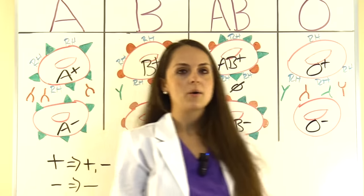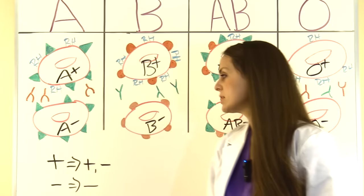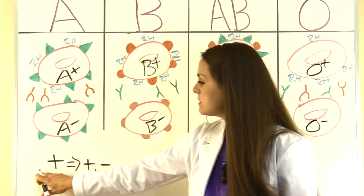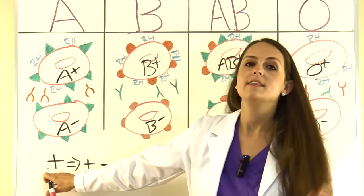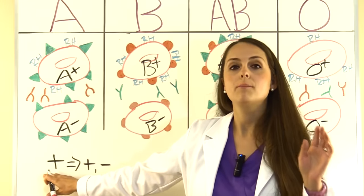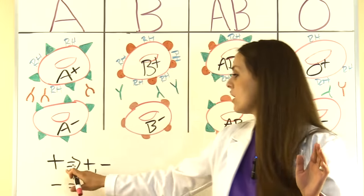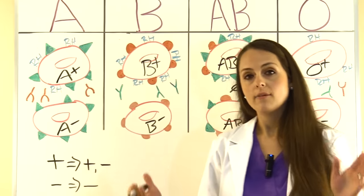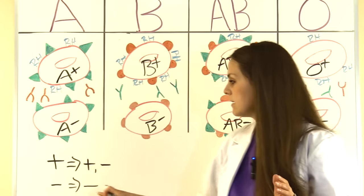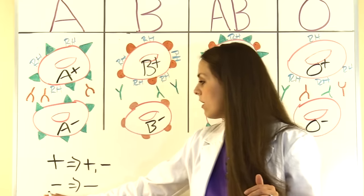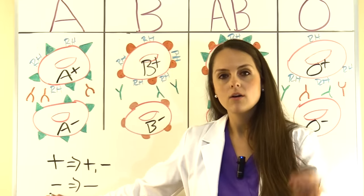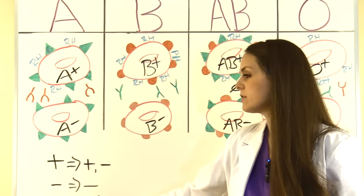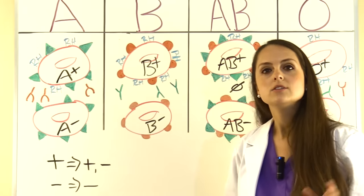Here's the key rule with Rh factor: if a person has a positive Rh factor, they can receive both positive and negative blood. However, if they are Rh negative, they can only receive other Rh negative blood.